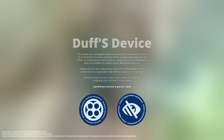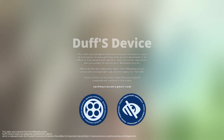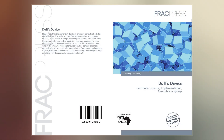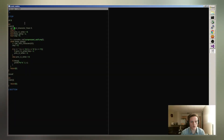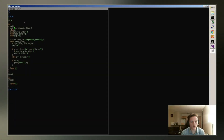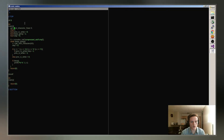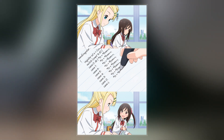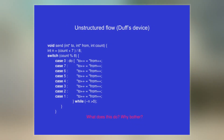In the C programming language, Duff's device is a way of manually implementing loop unrolling by interleaving two syntactic constructs of C: the do-while loop and a switch statement. Its discovery is credited to Tom Duff in November 1983, when Duff was working for Lucasfilm and used it to speed up a real-time animation program.